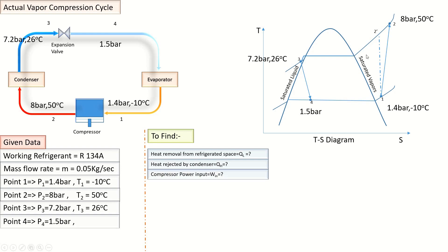Also work power input by the compressor, isentropic efficiency in order to know how much extra power is required by the compressor in actual vapor compression cycle as compared to ideal vapor compression cycle, and coefficient of performance of our whole refrigeration cycle.